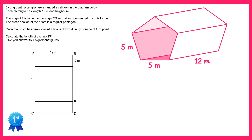Then we need to find the distance from E to F. E and F are on opposite sides of these rectangles, so they'll be on opposite sides of the prism, but they're also one rectangle apart. So let's imagine that point E was here and point F could be down here.